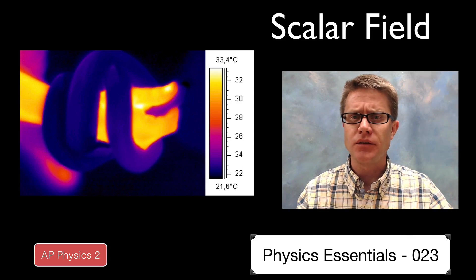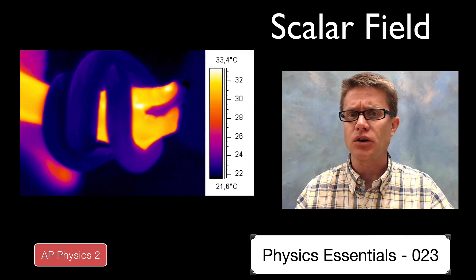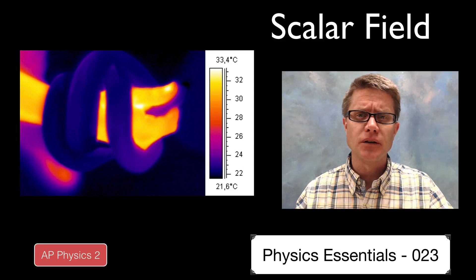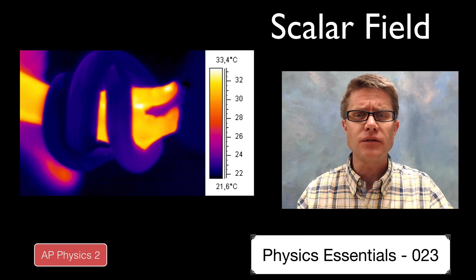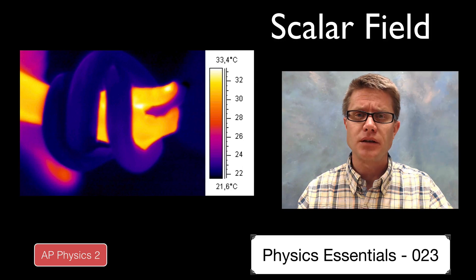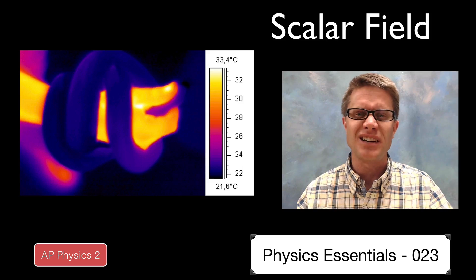In the last video we talked about a vector field which shows the position of vector quantities. And a scalar field is essentially the same thing. But instead of showing the direction of all those quantities, it just gives the magnitude of the quantity itself.